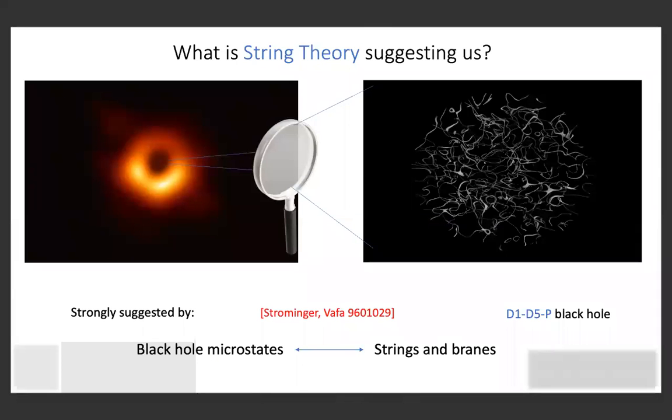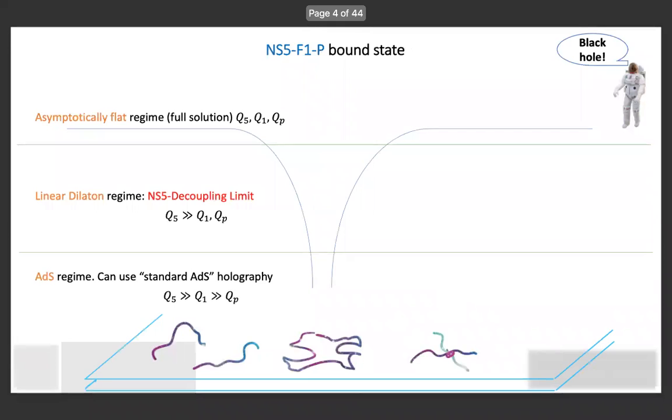Can string theory help us with this quest? What string theory is suggesting is that if you carefully look inside a black hole, you have bound states of strings and branes. This was strongly suggested by Strominger and Vafa with the famous D1-D5-P black hole. Rather than using the D1-D5-P black hole, what I'm going to discuss is the S-dual of it, so it's going to be the F1-NS5-P black hole. We're going to consider NS5-F1-P bounds which are also non-supersymmetric.